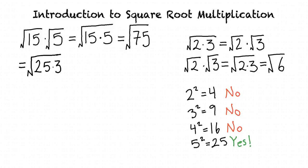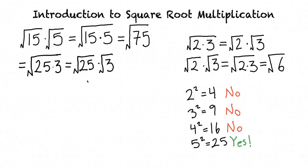Why did we do that? It seems like now it's more complicated than before. This is helpful because now that we've written it as the square root of the product of a square number and another number, we can rewrite this as the square root of 25 times the square root of 3. Since the square root of 25 is an integer, 5, we can rewrite this as 5 times the square root of 3. Since 3 does not have any factors that are perfect squares, we're done and this is as simplified as it can be.